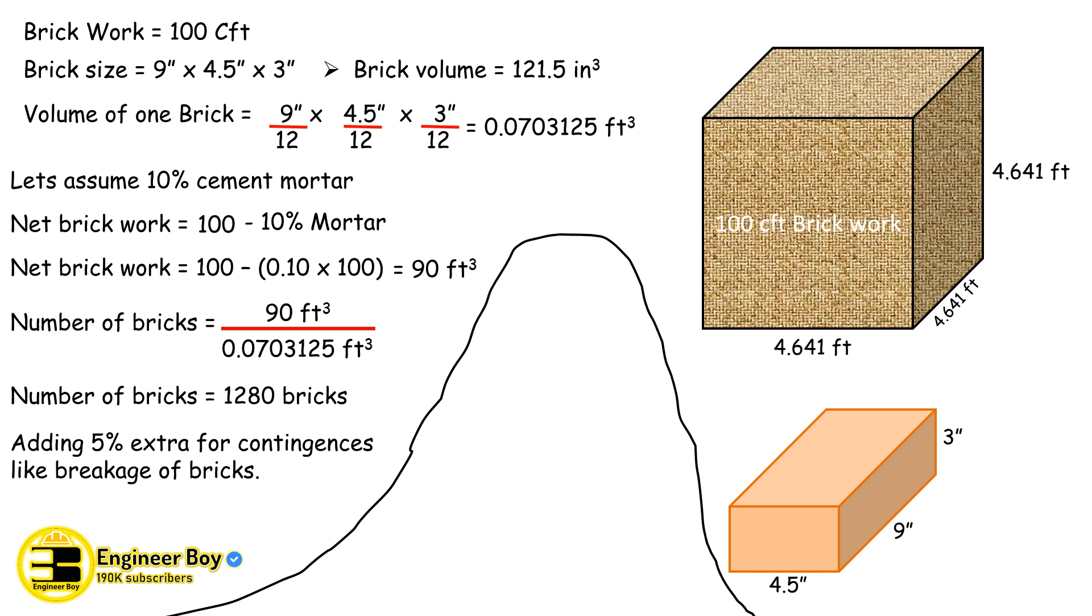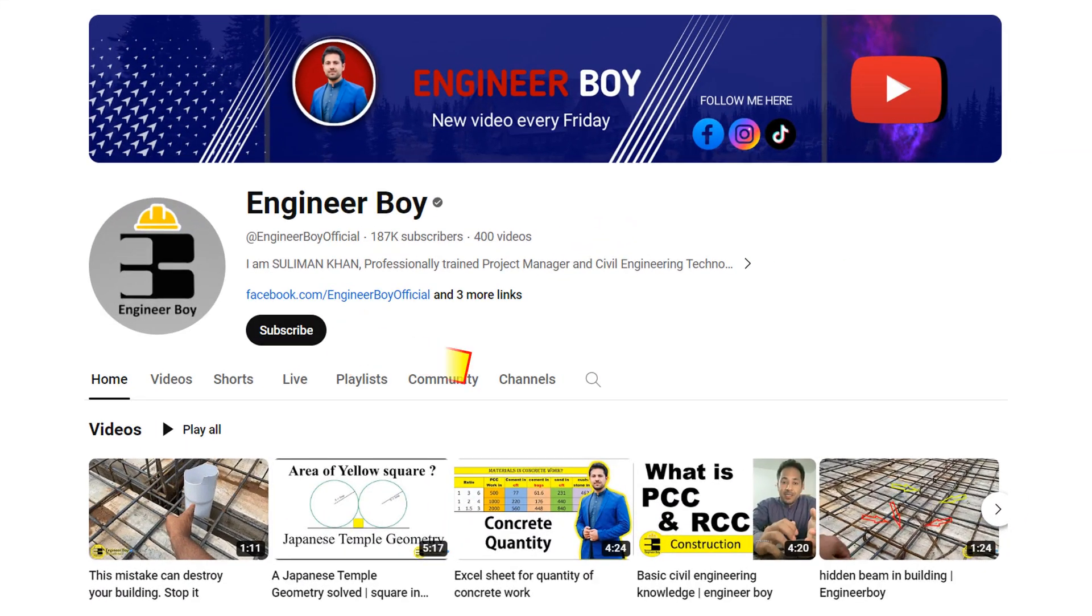For the number of bricks, the number of bricks can be now 1280 plus 5 percent. So 5 percent of 1280, that can be 64. 1280 plus 64, that is actually 1344, which we round it to 1350, because we always bring extra or we demand extra. So 1344, that's just near to 1350, so we say 1350 number of bricks are required. That means 1350 number of bricks are required for 100 cft brick work.